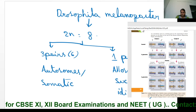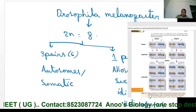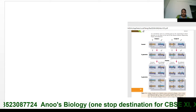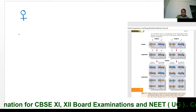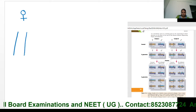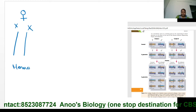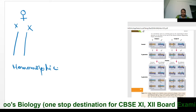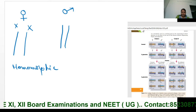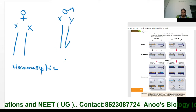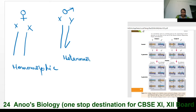Let me explain the X chromosomes in detail. In case of female Drosophila, both sex chromosomes are X chromosomes — X and X — which are homologous to each other, so these are homomorphic chromosomes. In case of male Drosophila, there is one X chromosome and one Y chromosome. These X and Y chromosomes are not homologous to each other, and hence they are called heteromorphic chromosomes.